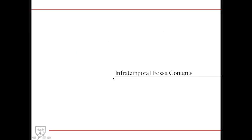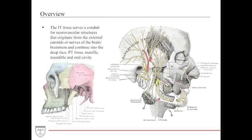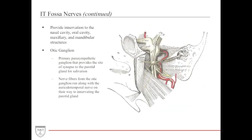The infratemporal fossa is essentially a conduit — a highway for many neurovascular structures coming from the central nervous system, including cranial nerves and arterial systems going up into the deep face and brain. The PT fossa has many nerves providing innervation to the nasal cavity, the oral cavity, the maxillary structures, and the mandibular structures.